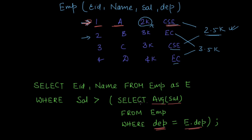You can see that we are using the alias e both in the outer query and in the inner query. In the inner query we are using the value e.department from the outer query — and that is how you can recognize a correlated query at first glance. This query will give us the employees whose salary is greater than the average salary of their department.